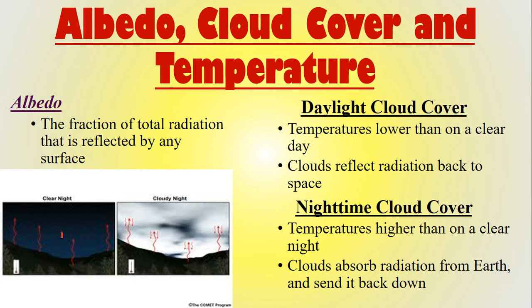Cloud cover also affects temperature, and we talked about this with albedo — the fraction of total radiation that is reflected from any surface. With daytime cloud cover, temperatures are lower than on a clear day because the clouds reflect radiation back to space and it can't warm the surface. With nighttime cloud cover, temperatures are higher because the clouds act like a blanket, trapping heat and reflecting it back down toward Earth.